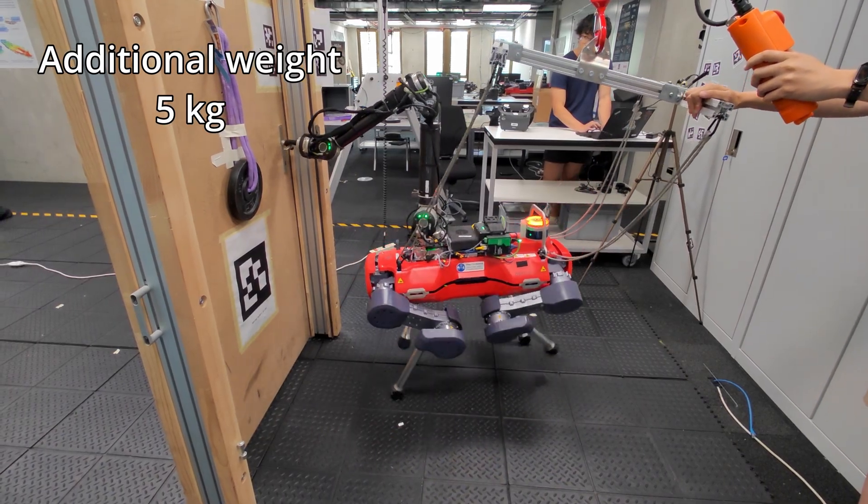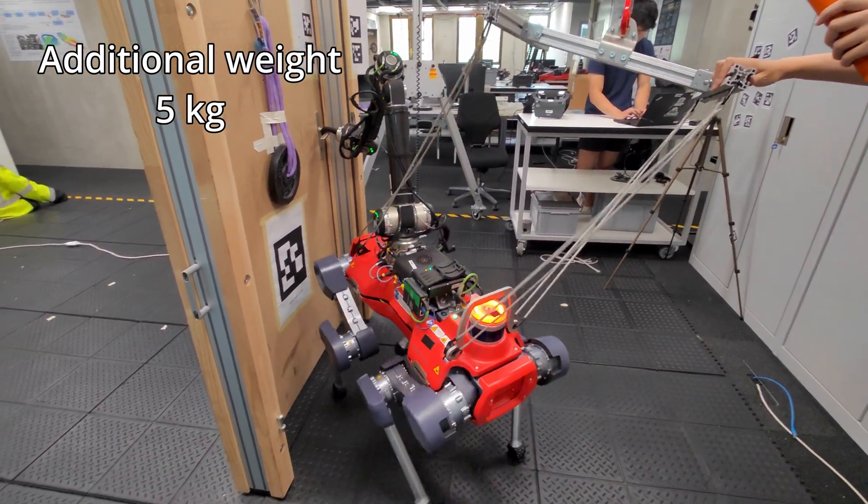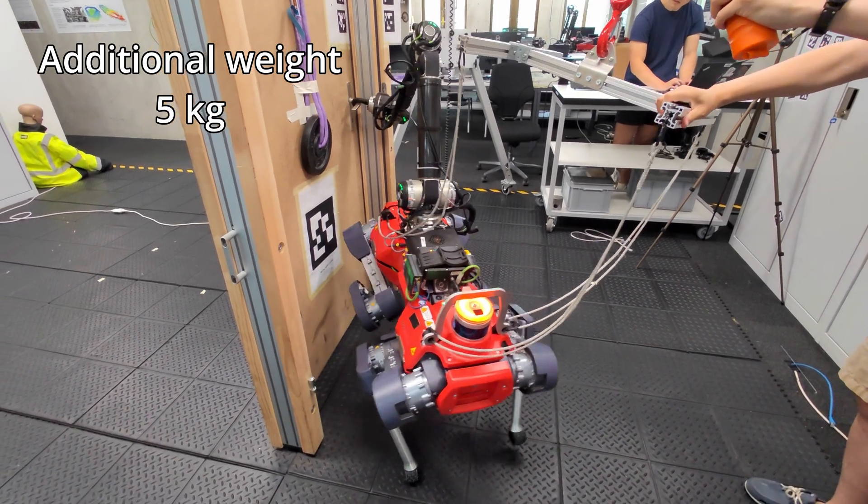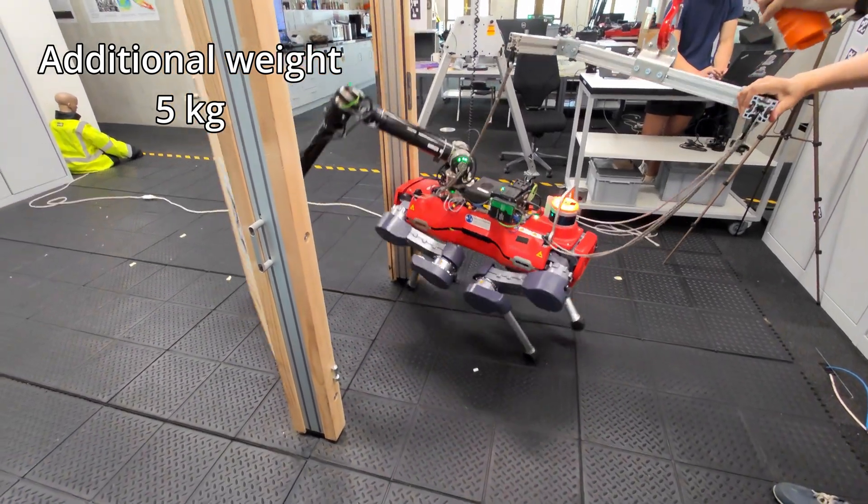The control policy's robustness has been verified through hardware experiments. Notwithstanding doors of varying weights, the robot consistently manages to open the door from either side.